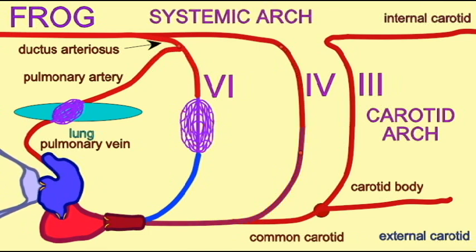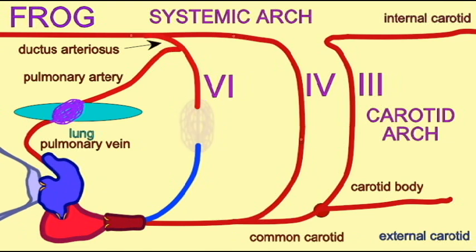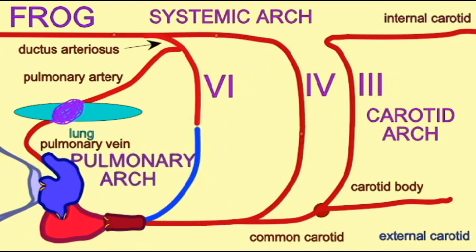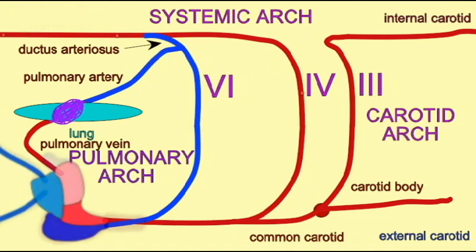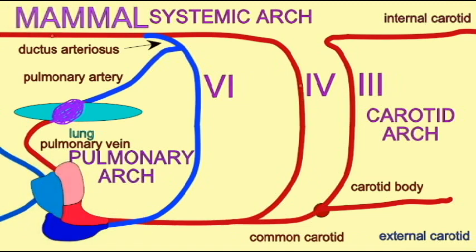The fourth aortic arch forms the pulmonary circulation and services the lungs. And then finally, the sixth aortic arch forms the systemic arch which services most of the body's tissues.